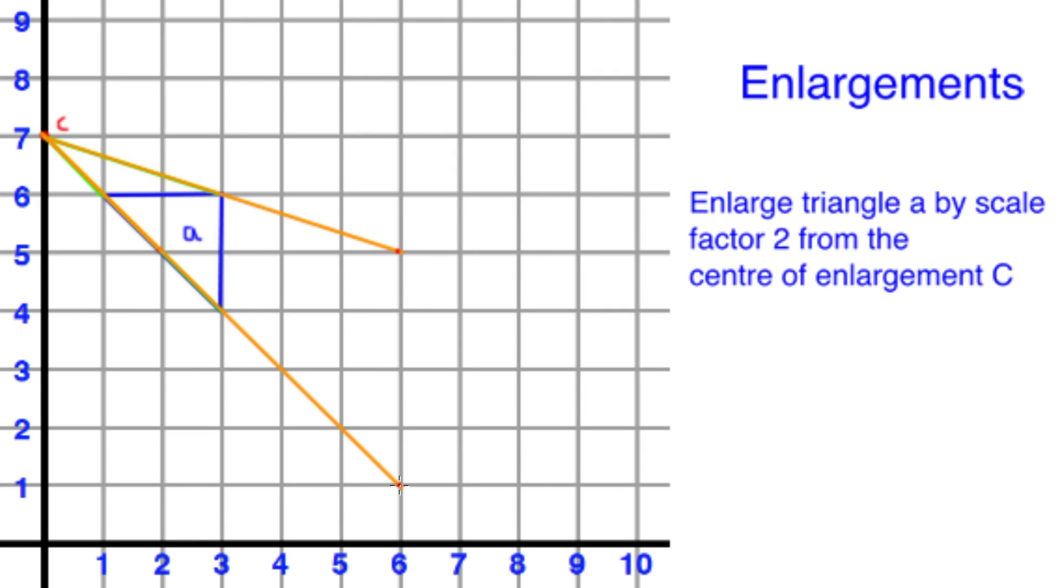When we have our points marked, we can simply connect them using our ruler to form our new triangle. Now to make a final assessment of if we're correct, we first measure the distance from the centre point to our new point and we ask, is it 2 times the same length as our original? If so, we can move on and measure all the lengths of the sides of our new shape and ensure that they are also twice the length of the original triangle.